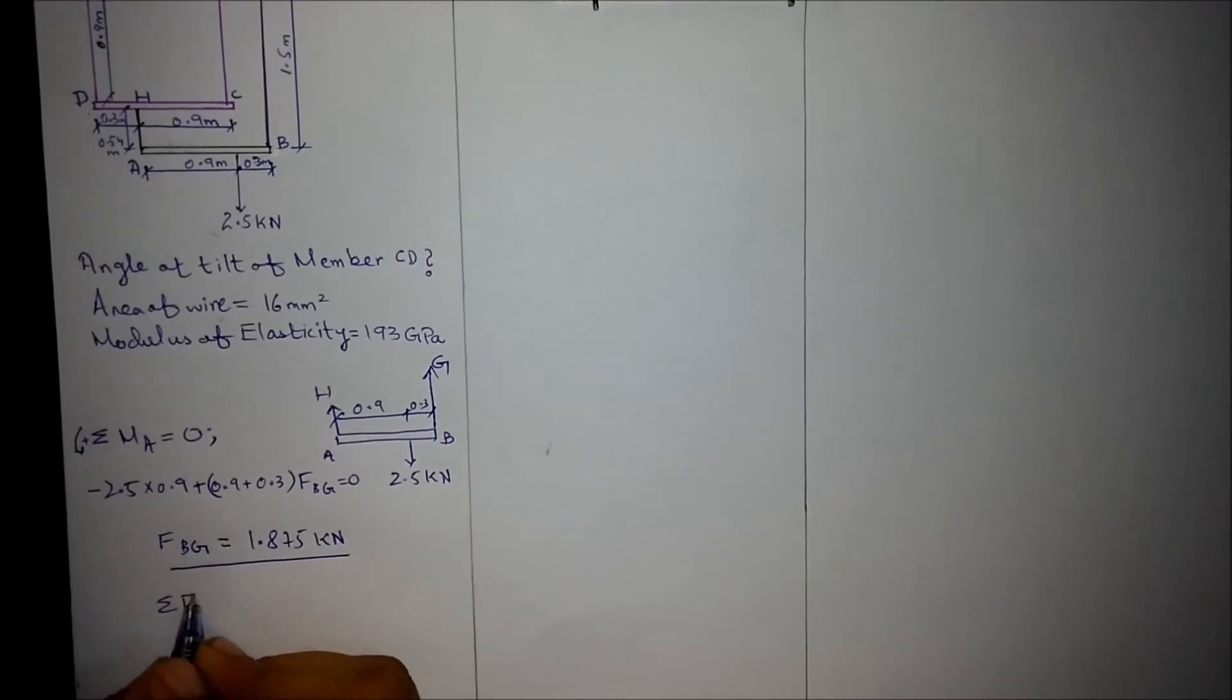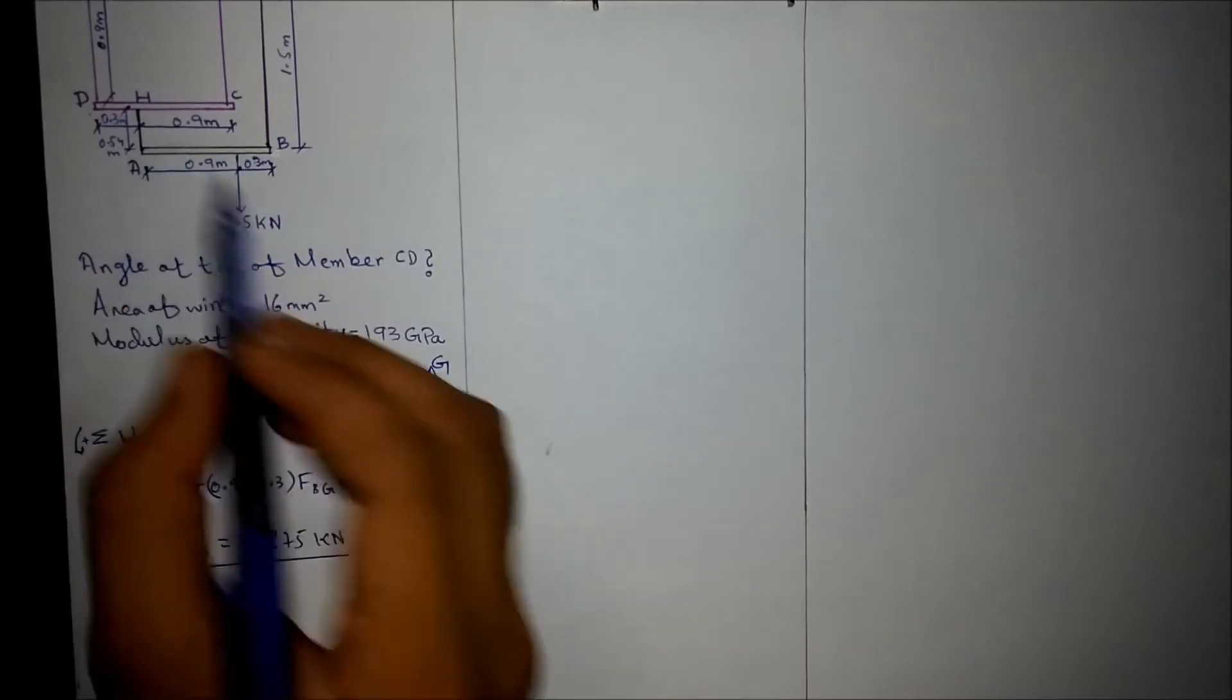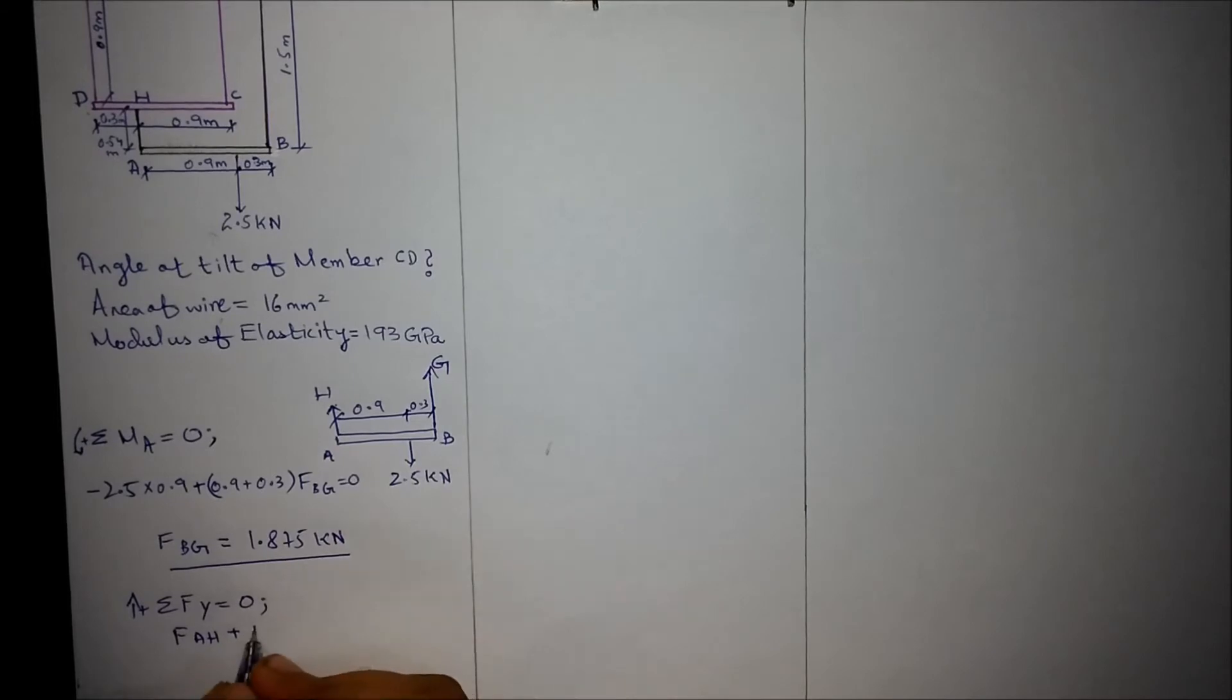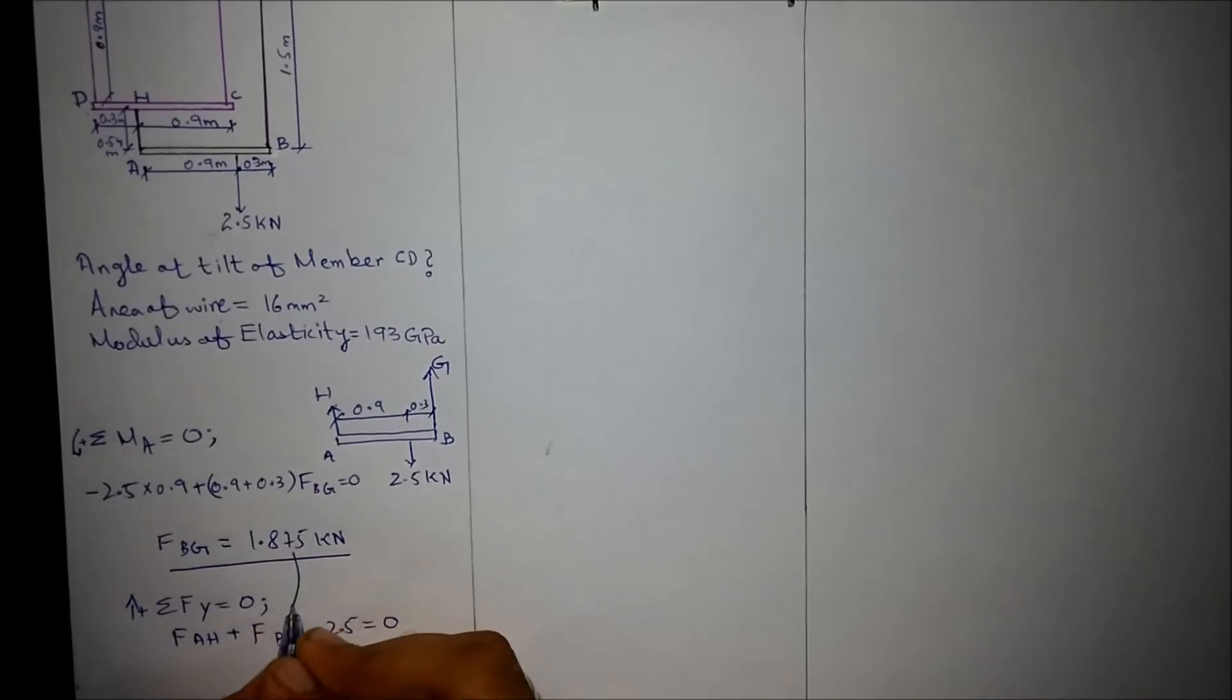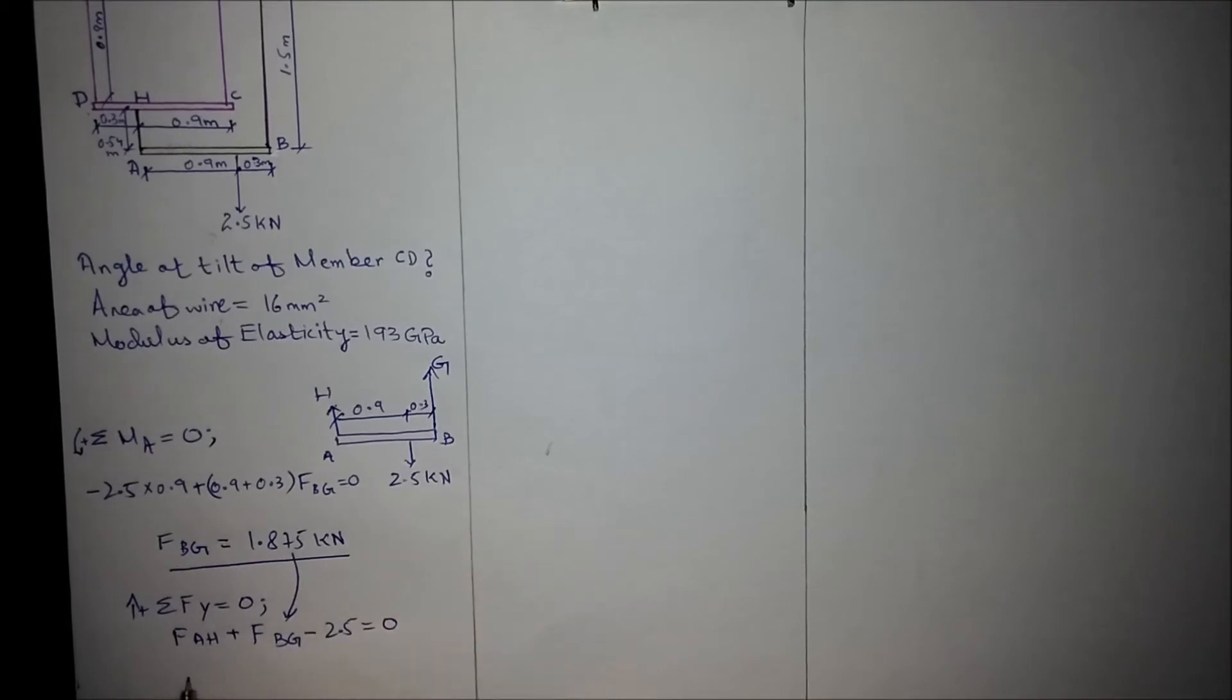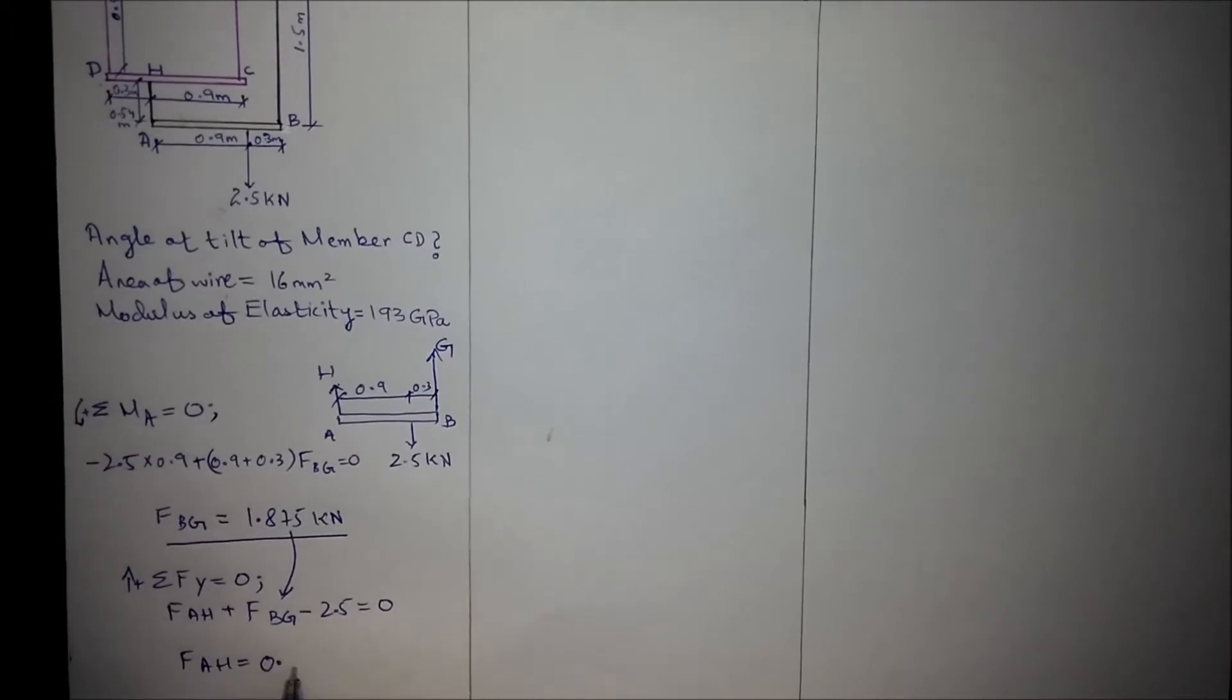Now we apply the summation of forces in y direction. We get FAH is the force in this member and FBG is force in this member. Both are in positive direction, minus 2.5 equals zero. We know that FBG is 1.875, so FAH comes out to be 0.625 kN.